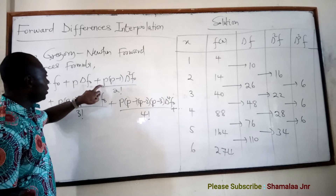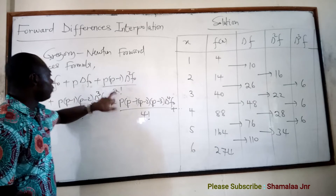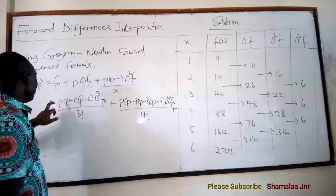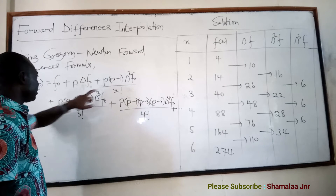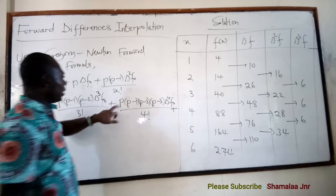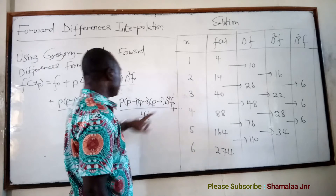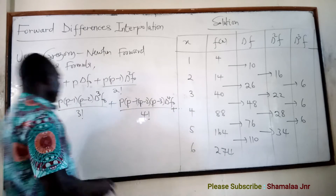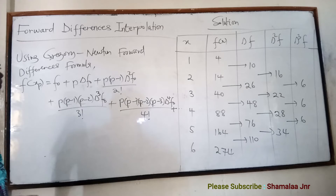To clarify the pattern: if you have p alone, then delta is squared and the denominator is 2 factorial. If p appears three times as p(p−1)(p−2), then delta is cubed and the denominator is 3 factorial. If p appears four times, then delta is raised to the 4th power and the denominator is 4 factorial. This is the formula we are going to use.